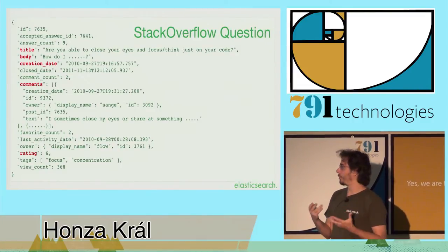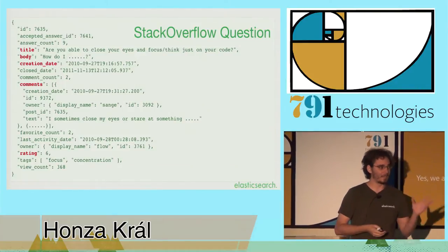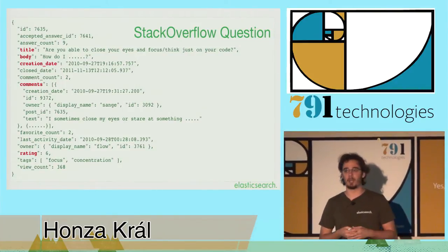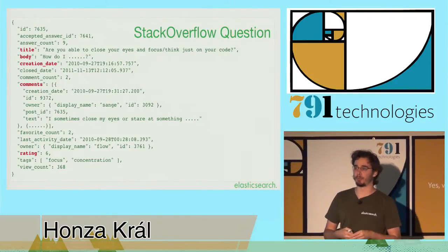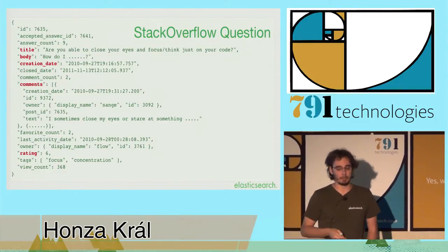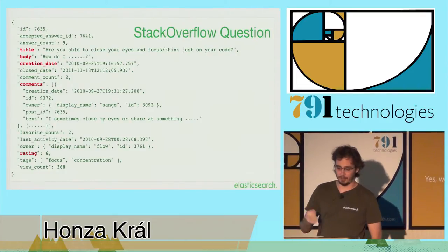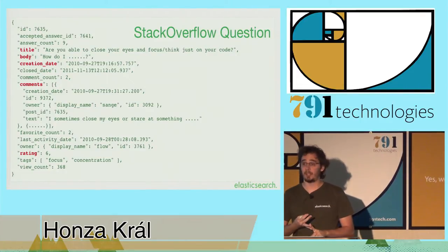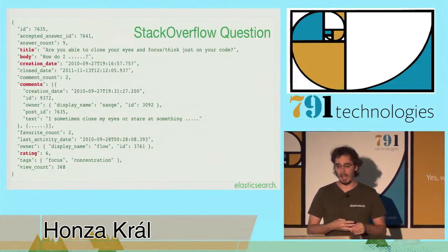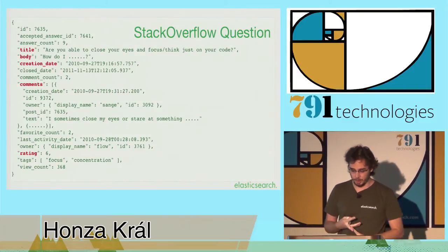So to give you an example, and don't worry, I don't expect you to be able to read this, this is a sample document from indexing data from Stack Overflow. I'll later be doing a demo, so this is the data that I'll be using. You can see that I have several interesting fields that I've highlighted. One is a title and body. Those are just text fields that do exactly as you would expect. And we have a datetime as a creation date.